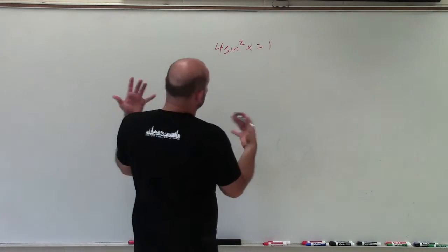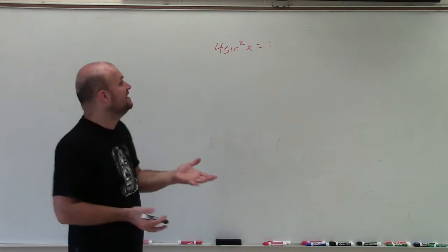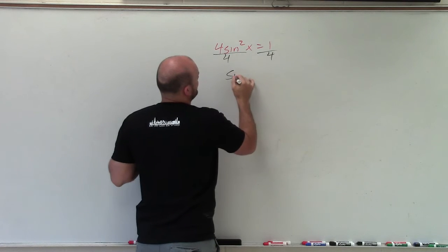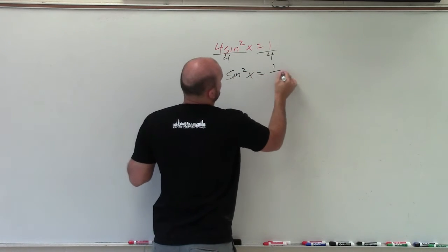So to go ahead and do that, what we need to do is we need to solve for our x, right? And we want to isolate that. So to do that, I'm just going to divide by 4 on both sides. And I have sine square root of x equals 1 fourth.